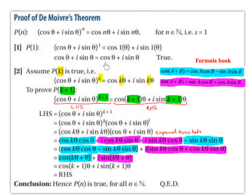This is our assumption, and we're going to use it to prove P(k+1). So P(k+1) is: cos θ + i sin θ to the power of k+1 is equal to cos(k+1)θ + i sin(k+1)θ. We're swapping that k for k+1 throughout. These are two formulas from our formula book — we'll have a look at them in a second.